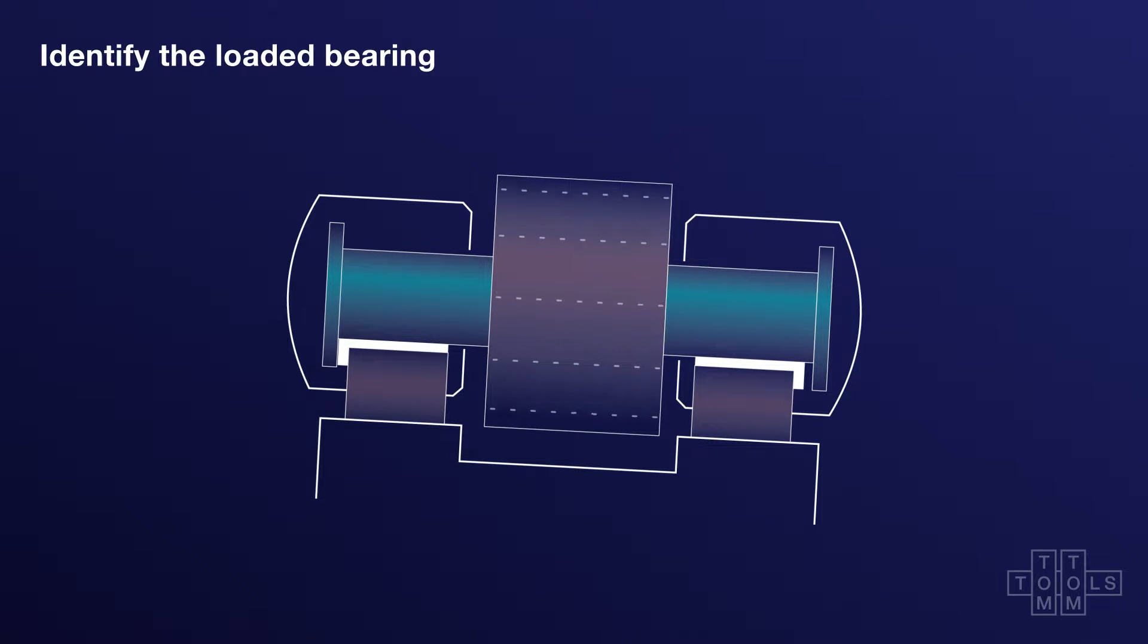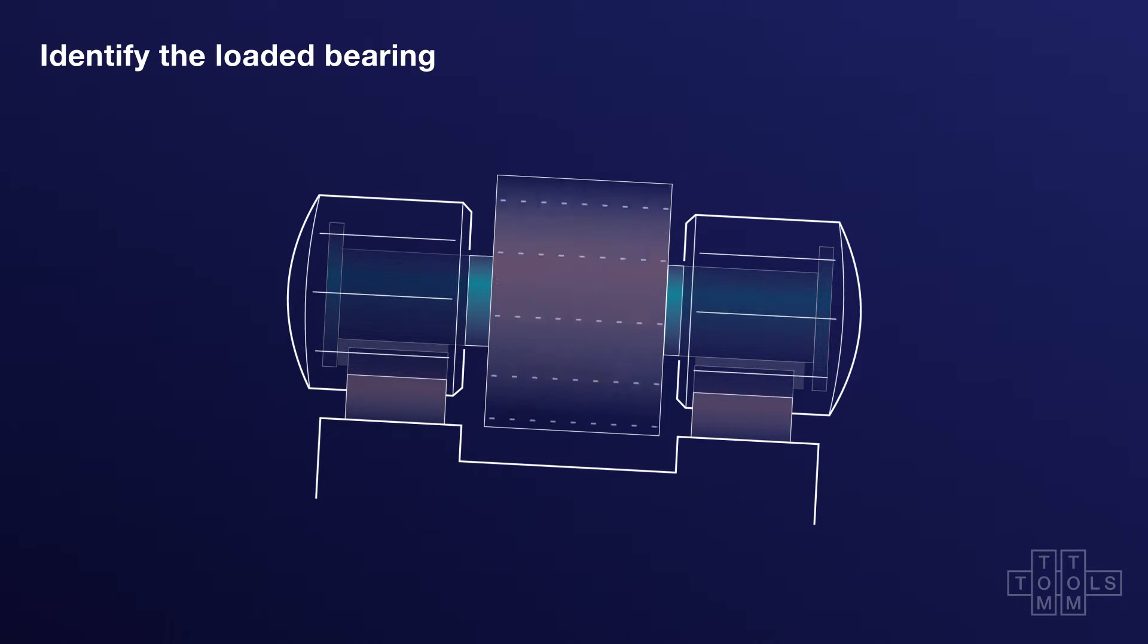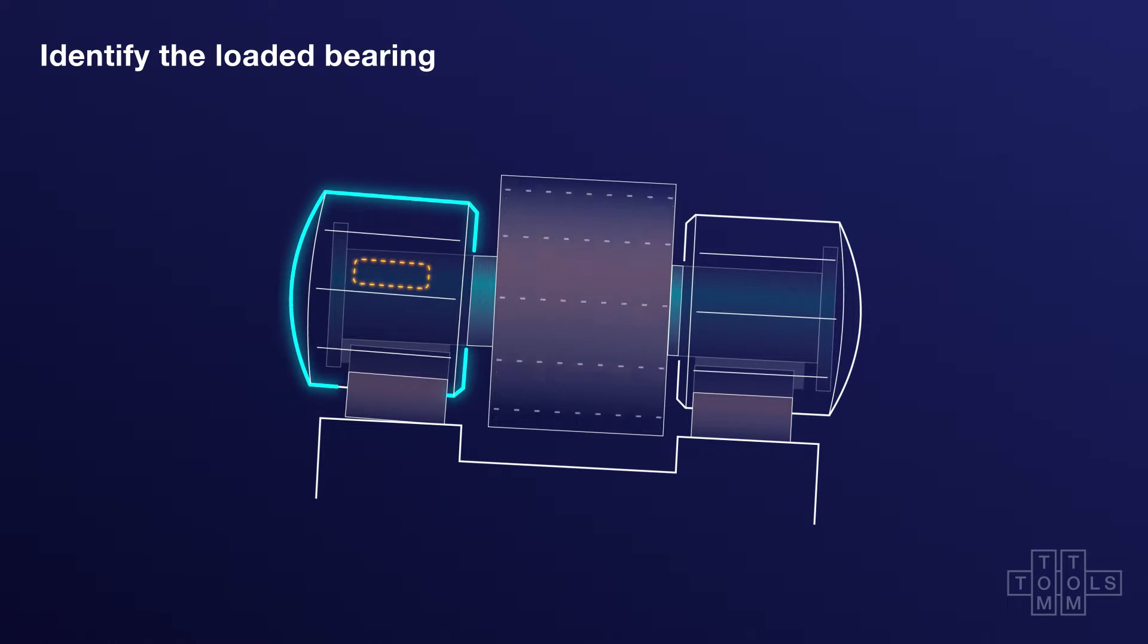In order to properly measure the effects of axial forces, it is necessary to identify the bearing that is subject to the thrust load. This is where the thrust load meter must be installed.